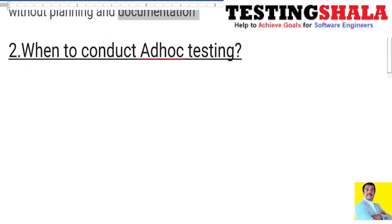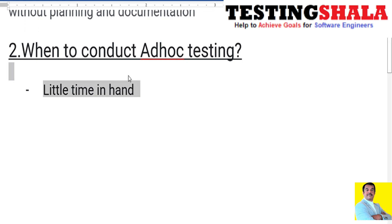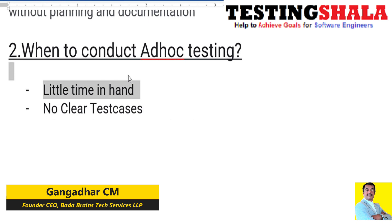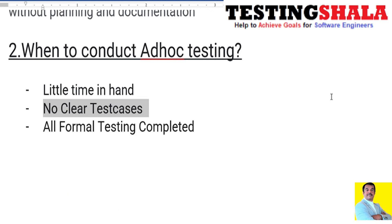The second question is: when do we conduct ad hoc testing? We do ad hoc testing when we do not have enough time or enough resources to complete testing. Also, when there is no proper documentation or clear test cases available, we perform ad hoc testing. Additionally, once all formal testing is done, we do ad hoc testing to find more issues in the application or system.